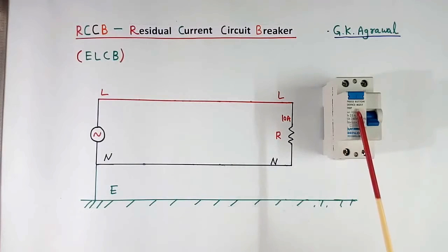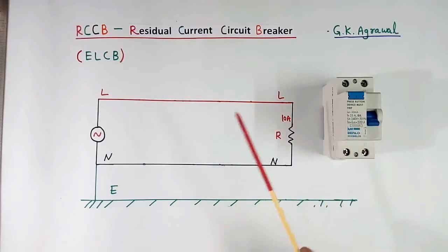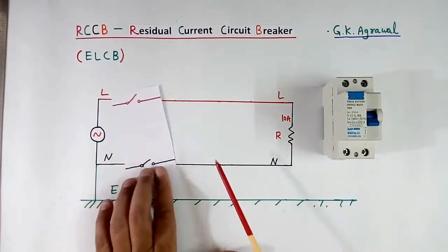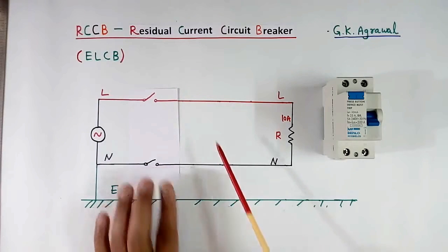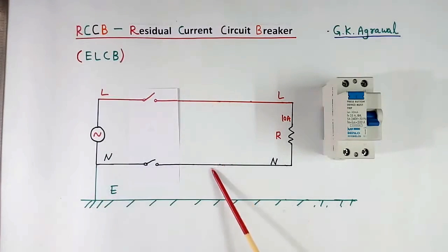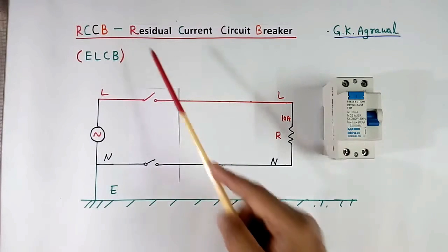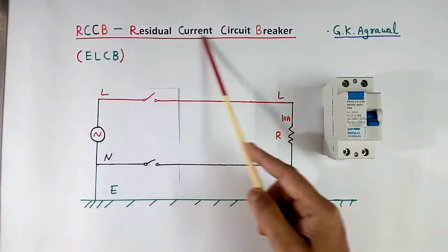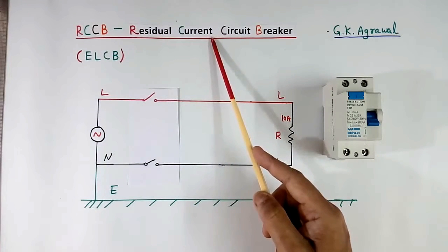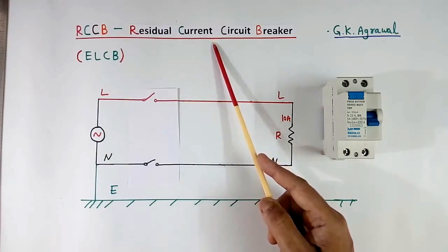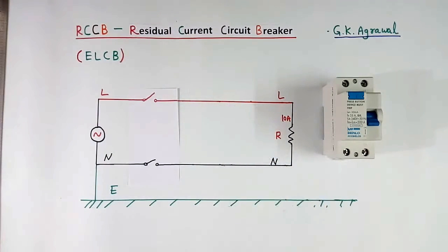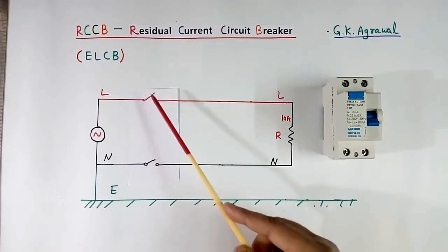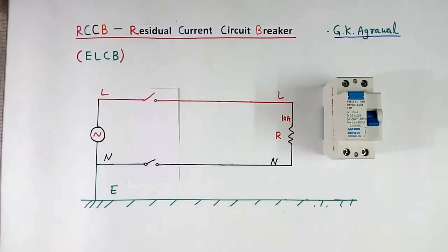The function of this breaker is: when there is no equal current in the 2 wires, it will sense and trip. These 2 connections — the difference in current is called residual current. Now how residual current flows, that we will learn first. The breaker opens both connections — line and neutral both.